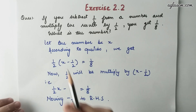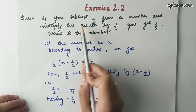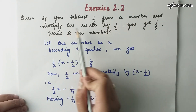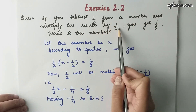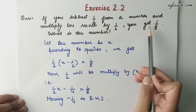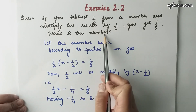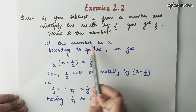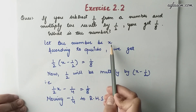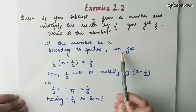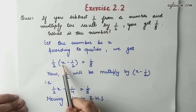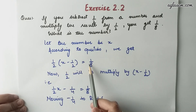Question number 1: If you subtract 1 by 2 from a number and multiply the result by 1 by 2, you get 1 by 8. What is the number? Let us suppose the number be x. According to the question, we get 1 by 2 multiplied by (x minus 1 by 2) is equals to 1 by 8.